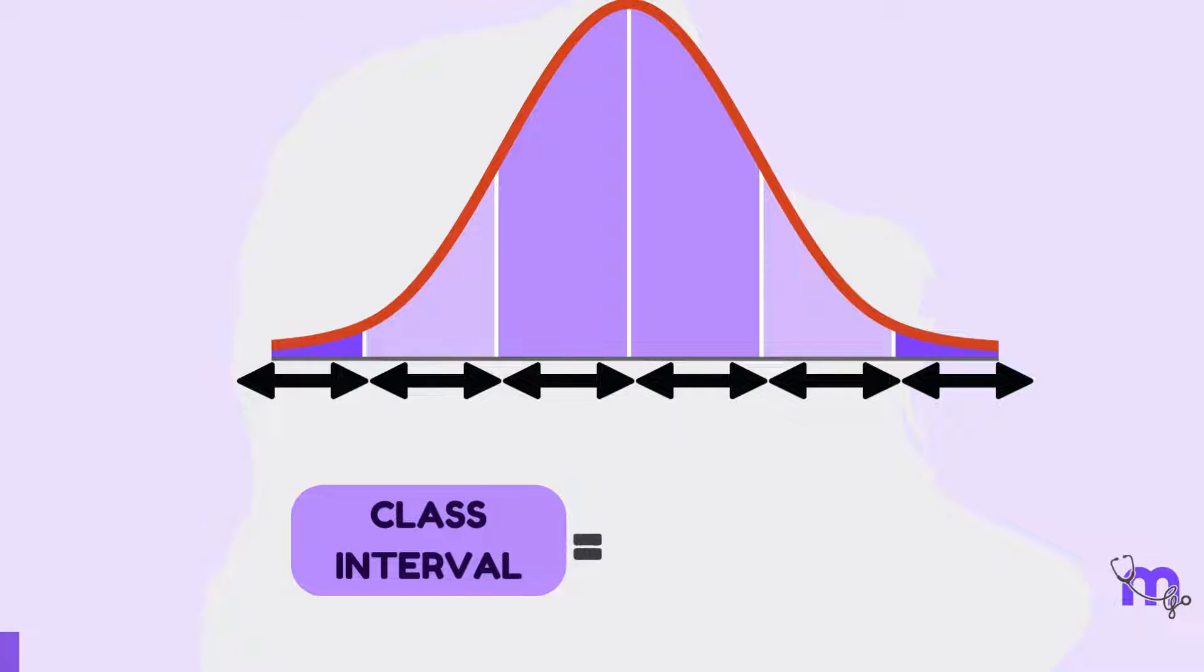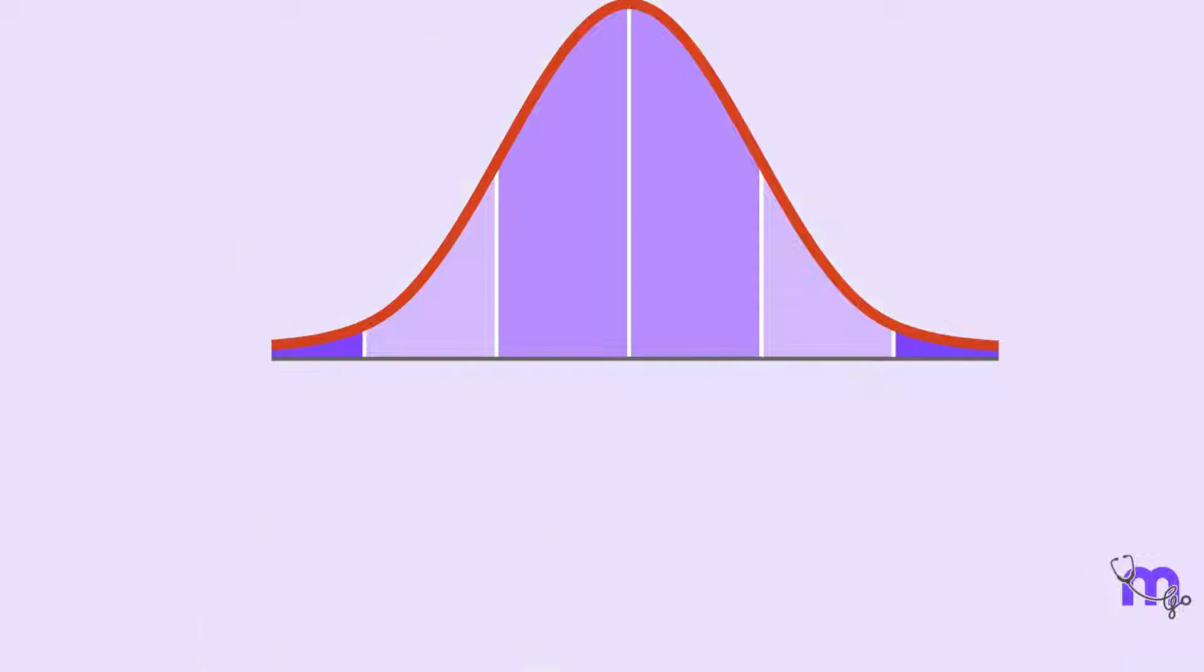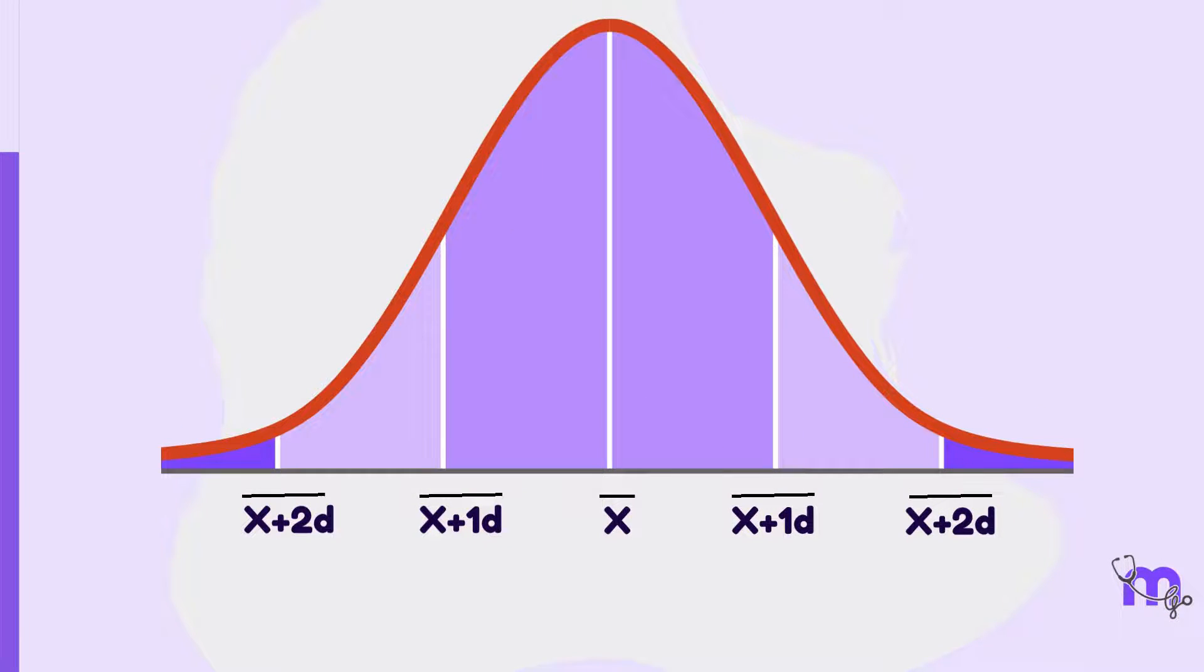Here, the class interval refers to the numerical width of any class in a particular distribution. In a normal curve, as you can see, the central point is indicative of the mean value of the particular distribution.